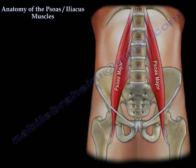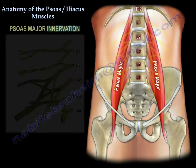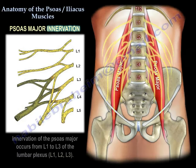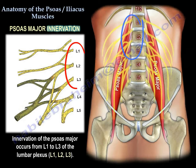Innervation of the psoas major occurs from L1 to L3 of the lumbar plexus: L1, L2, and L3.